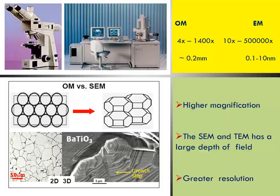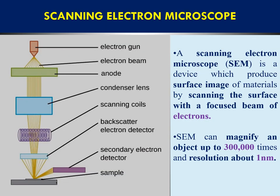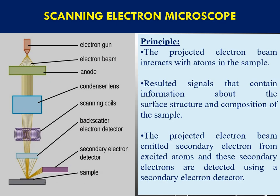The Scanning Electron Microscope is a device which produces the surface image of a material by scanning the surface with a focused beam of electrons. We apply a focused beam of electrons on the surface of the material, and this focused beam scans the surface and provides the surface image. The object can be magnified up to 300,000 times and resolution is about 1 nanometer. The principle applied here: the projected electron beam interacts with the atoms in the sample.